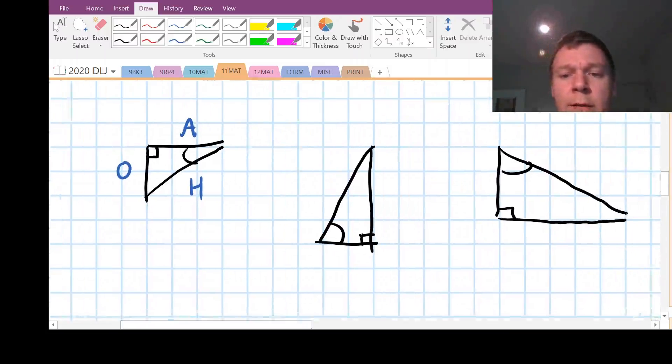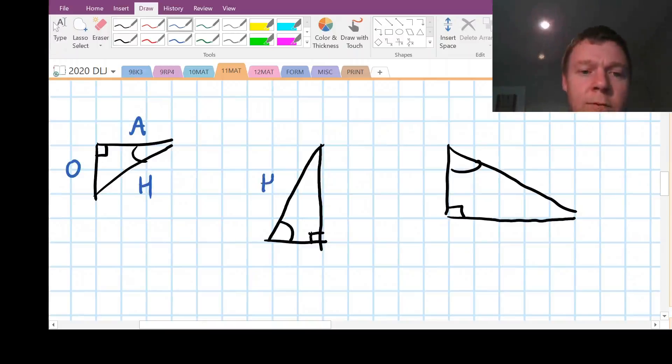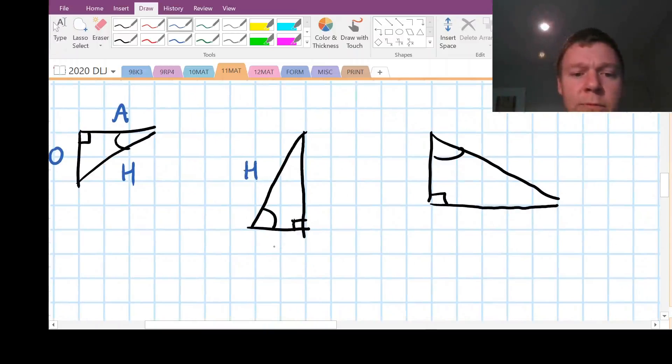All right, let's do a few more. So opposite the right angle is our hypotenuse. Attached to the angle, adjacent. And opposite the angle for this one.